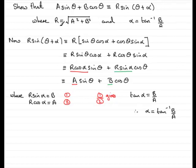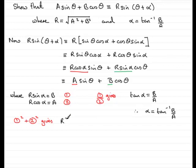The other result is that r equals the square root of a squared plus b squared. To do that, I'm going to take each of equations 1 and 2, square them, and add them together. Squaring equation 1 gives r² sin² α = b², and squaring equation 2 gives r² cos² α = a². Adding the two together, we get r² sin² α + r² cos² α = b² + a².